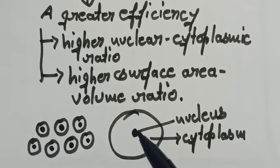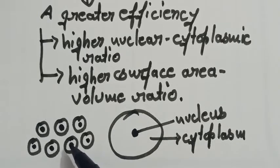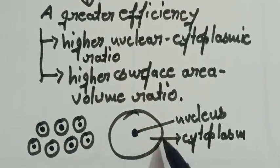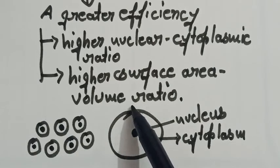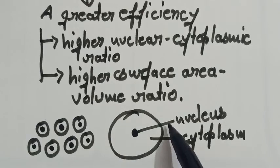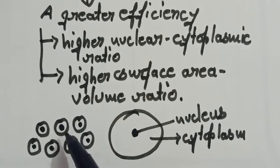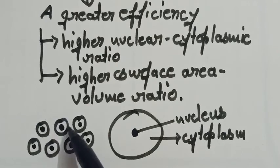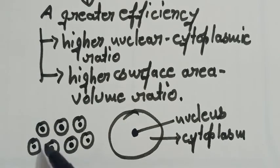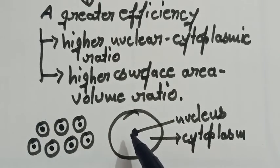So as it is very clear from here that a nucleus in smaller cells have greater efficiency or it can easily control the cell activities. Whereas, smaller cells are having higher surface area. In this cell, the surface area, free surface area is only this one. Whereas, if we compare the surface area of these cells collectively, it is much higher than that of this cell.